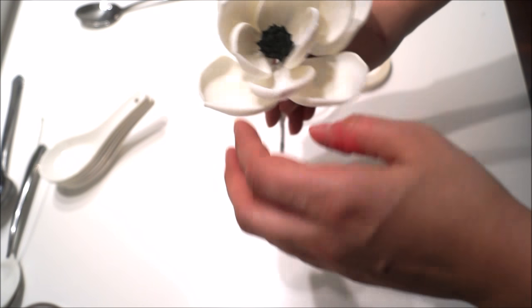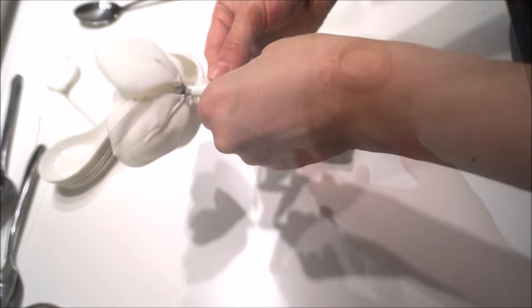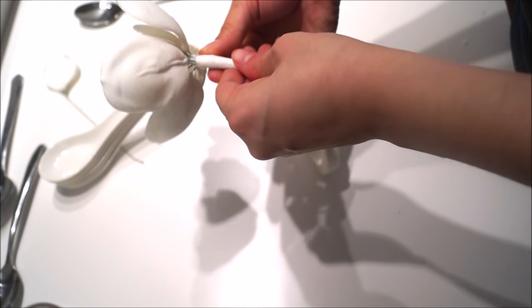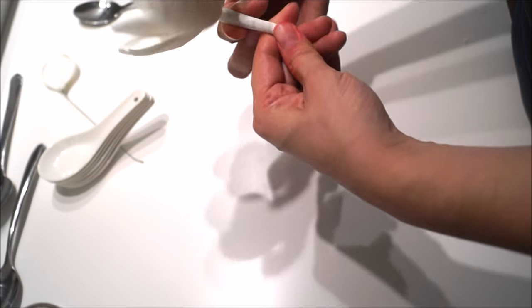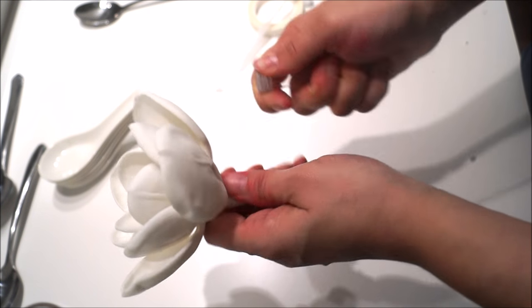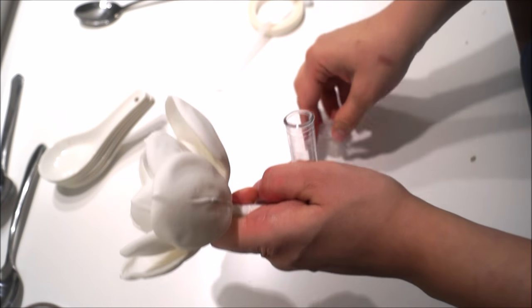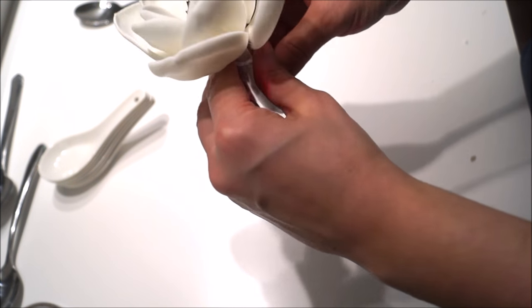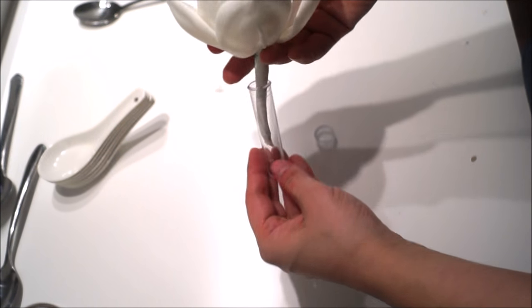If you're going to insert your flower to your cake, make sure to cover the entire wires using your floral tape because metal is not food safe. You can also use one of these or a straw that you're simply going to insert into your cake and then put your flower into it and then it will become food safe.